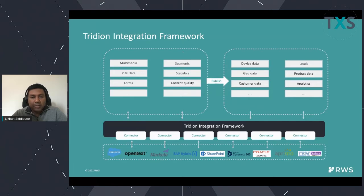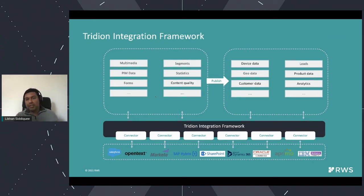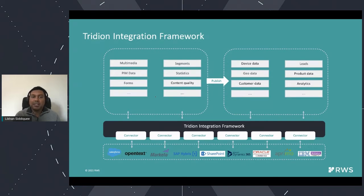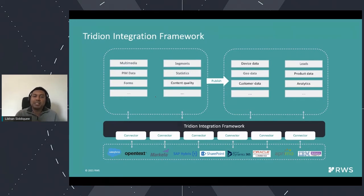Looking at our integration framework, what you can see is the Tridian integration framework itself with all connectors connecting to external systems. On the top part, this is where we will start using the integration framework more. We used to only use it for external multimedia components via ECL. Now we are using taxonomy systems as well. The intent is to move toward more integration using this framework for different parts of data — incorporating segments, statistics, and other information into the Tridian system.